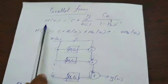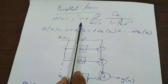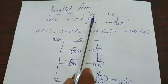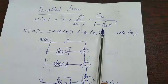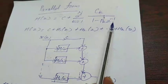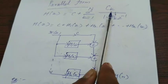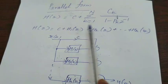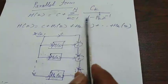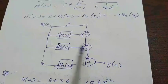Parallel form realization will be in this format: h of z equal to c, that is a constant, plus summation of k varies from 1 to n, so that means it is based on number of poles. In the denominator we are having 1 minus pk z power minus 1 and in the numerator we are having ck, so that is also constant. In this structure only we have to make the given transfer function, then we have to realize each separate function, then connect everything into a single function.